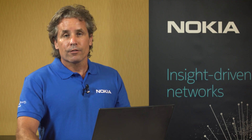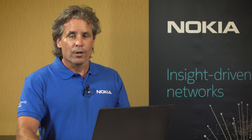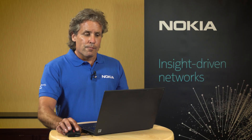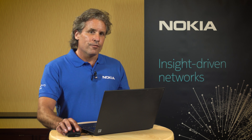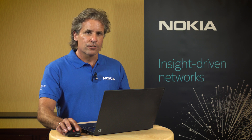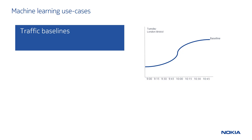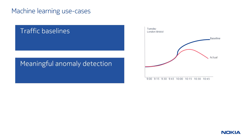I'll start by describing a few of the use cases that we're applying machine learning to. Manually configured threshold crossing alerts can be challenging to manage at scale and can often produce many false positives since they don't reflect dynamic network behavior. Instead, traffic baselines can be used to automatically learn expected traffic behavior based on time of day and day of week, such that once the expected normal operating behavior has been learned, then when unexpected things happen, meaningful anomalies can be detected and raised.